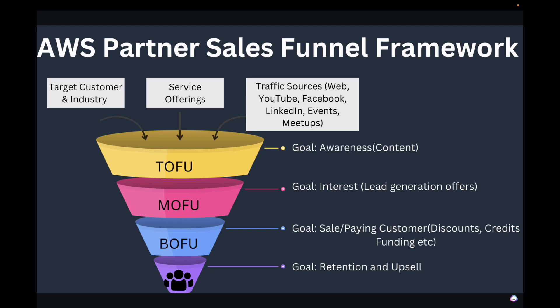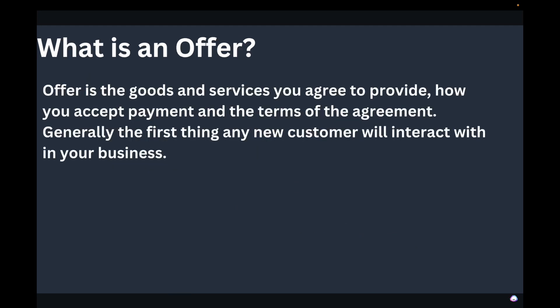The bottom of the funnel goal is sales — converting leads into paying customers. You can use discounts, credits, and funding options, which we'll cover shortly. Finally, once you have the customer, the goal is retention and upsell: find out what other AWS services you can provide to that customer. That's the framework for building your sales funnel — start with target customers, create service offerings, identify traffic sources, set targets, and execute these activities.